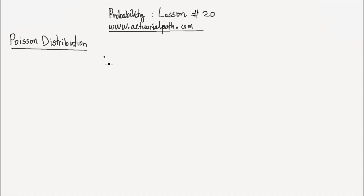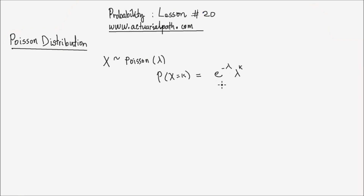If x follows a Poisson distribution with parameter lambda, then its PMF is given by e to the negative lambda, times lambda to the power of k, divided by k factorial, where the support ranges from 0 to infinity. Here, lambda is the rate of occurrence of the event that you're modeling.